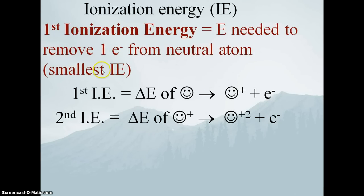The first ionization energy is the smallest, and second ionization energies are always larger. The reason is similar to the rationale for atomic radius: as we remove electrons, we still have the same number of protons, but by reducing the number of electrons by one, we have fewer electrons for the protons to hold onto. So those remaining electrons are held a little bit tighter and drawn in a little bit closer. Therefore, the third ionization energy is always going to be bigger than the second, and the fourth bigger than the third, and so on.